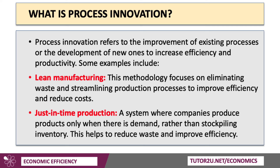Process innovation is the improvement of existing production processes, or the development of new ones designed to improve efficiency and productivity. Lean manufacturing, for example, focuses on eliminating waste and streamlining manufacturing processes — such as mass manufacturing of semiconductor chips or electric vehicles. Just-in-time production is another innovative system, associated with Toyota and Nissan, where companies produce products only when there is demand rather than stockpiling inventories, so products arrive just in time for assembly. This helps to reduce waste and improve efficiency.